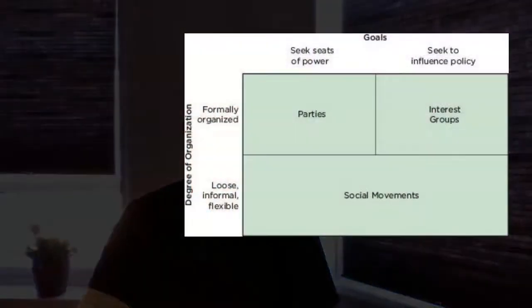Having a purpose and direction — and also some sort of leadership — is necessary to focus the efforts of the social movement. What is the difference between social movements, political parties, and interest groups? Political parties want to come into government; interest groups want to affect policy; and social movements can do both. The main difference is that social movements are much more loosely and less organized compared to political parties and interest groups.